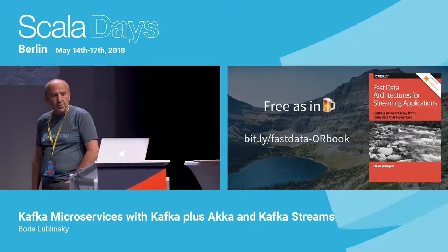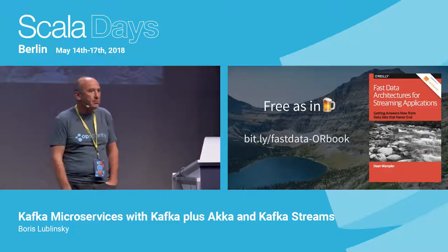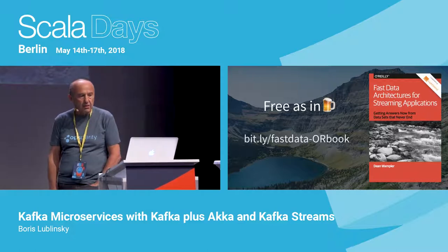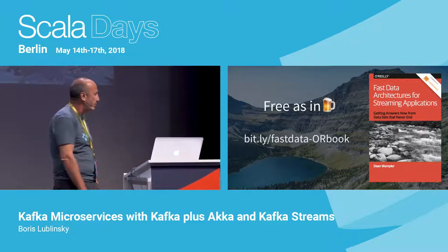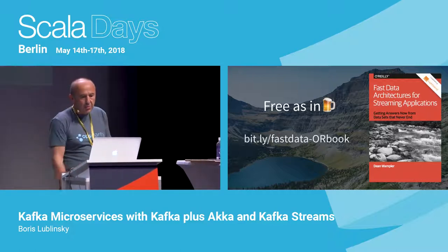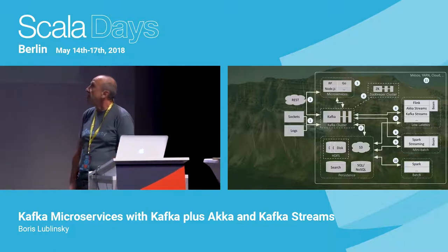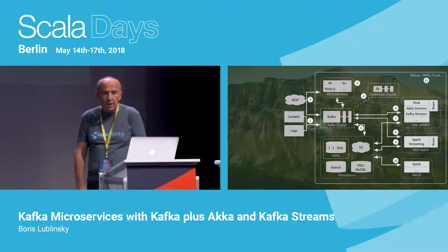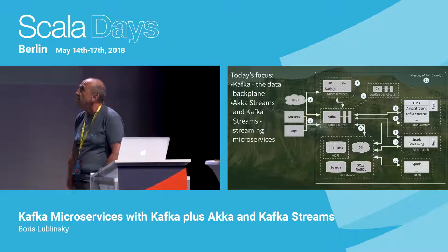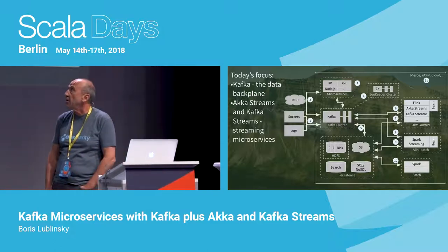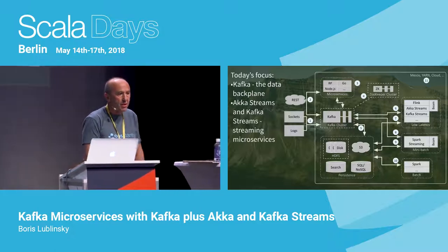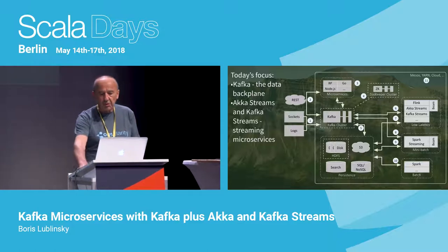Dean wrote a book a couple of years ago. It's a little bit dated, but it's still very relevant. He talks about different architectures for streaming and fast data. In his book, he proposes the overall architecture for streaming data. In this talk, we will concentrate on a couple of things: Kafka as the data backbone, and Akka Streams and Kafka Streams for implementation of streaming.